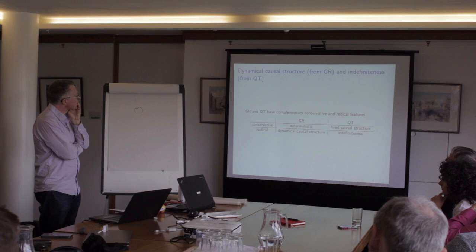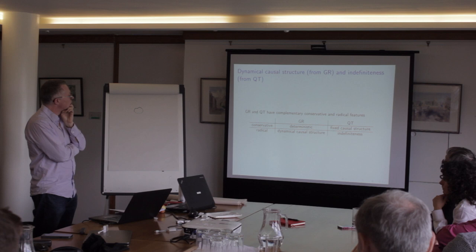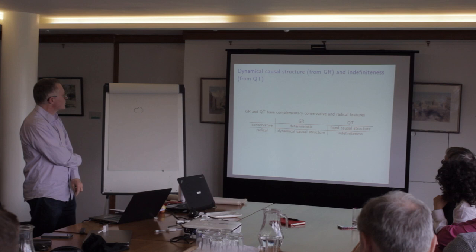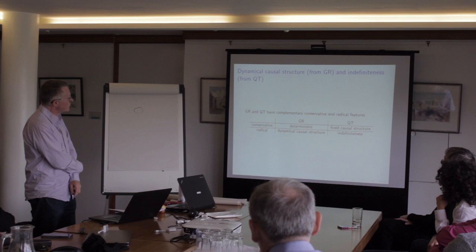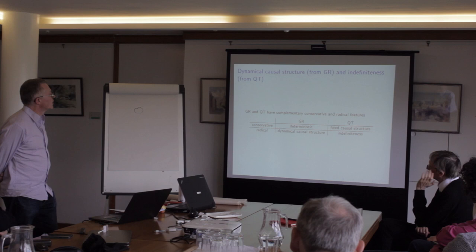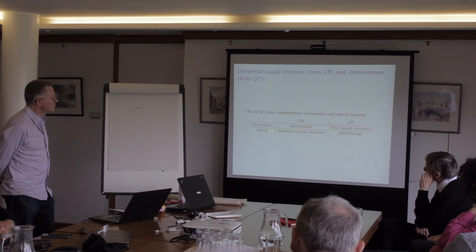The first thought is to look at the two less fundamental theories — general relativity on the one hand and quantum theory on the other — and notice that they have, in some sense, complementary conservative and radical features. General relativity is conservative in that it is a deterministic theory: given sufficient boundary information, you can determine exactly what the physical content of a solution is. On the other hand, it is radical in that the causal structure — which is determined by the metric in GR — is dynamical: you solve for the causal structure, you don't give it in advance.